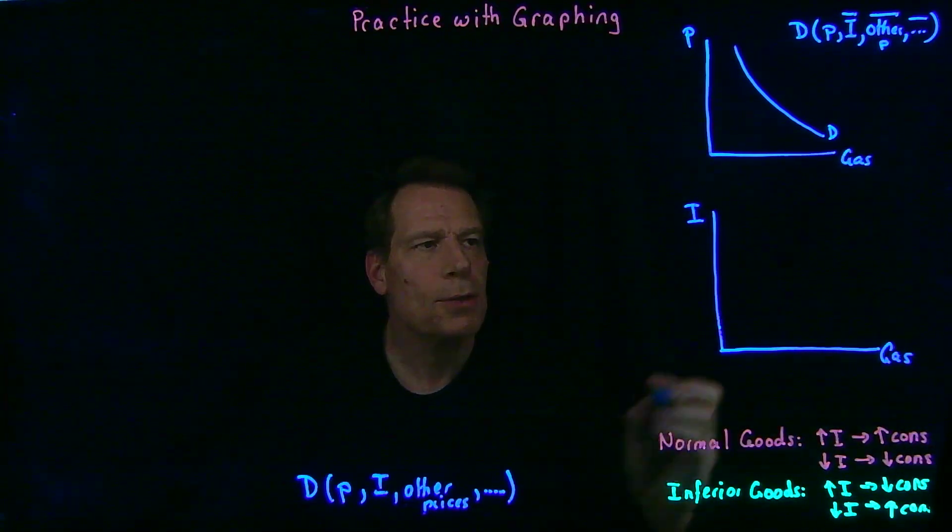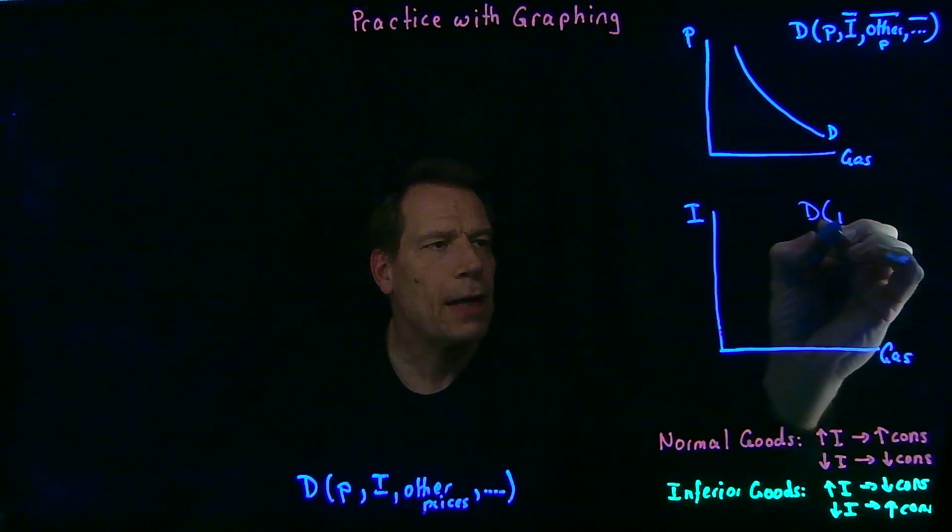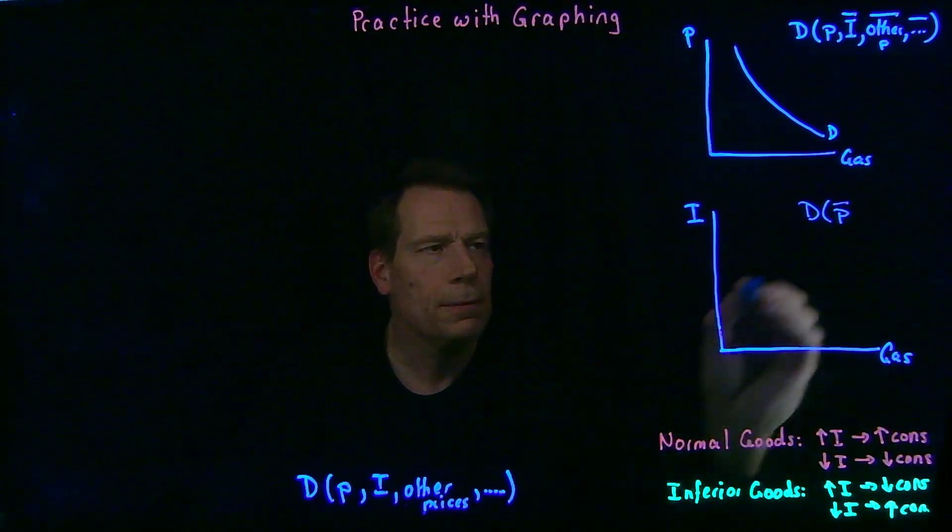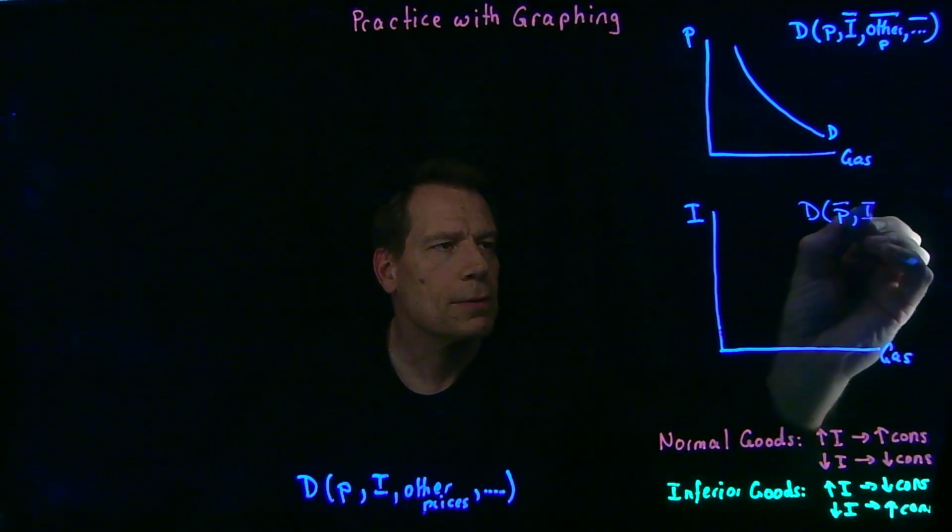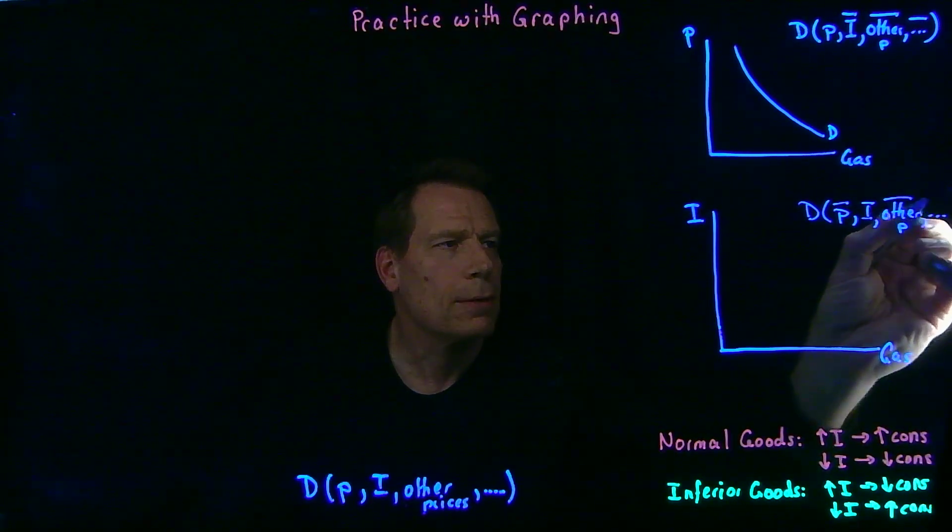So now I'm asking you to graph what's the quantity demanded, not as price changes—we'll hold price fixed—but as income changes, when we hold other prices fixed as well, and everything else that might matter also.